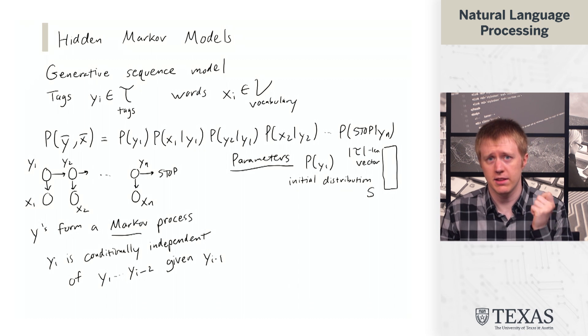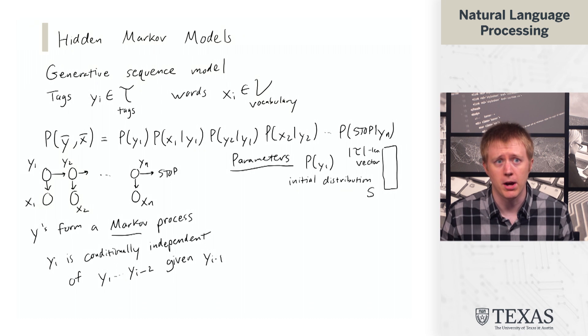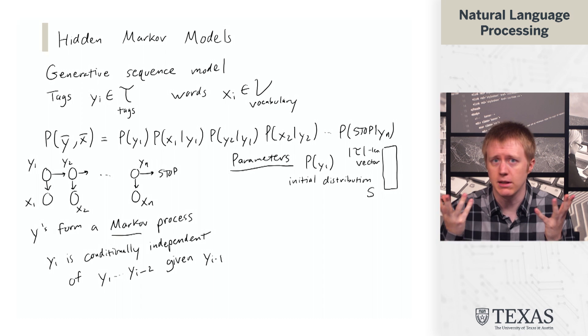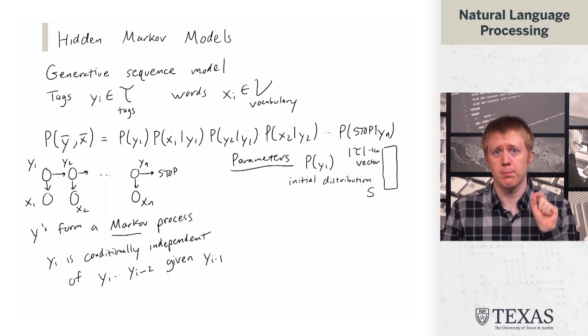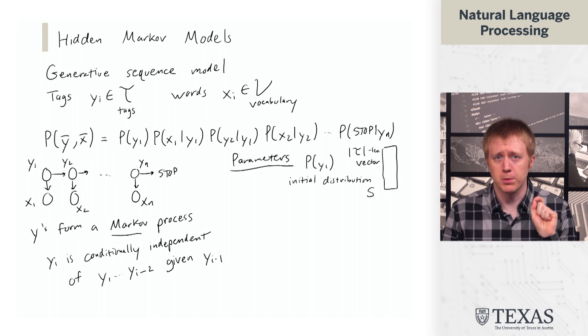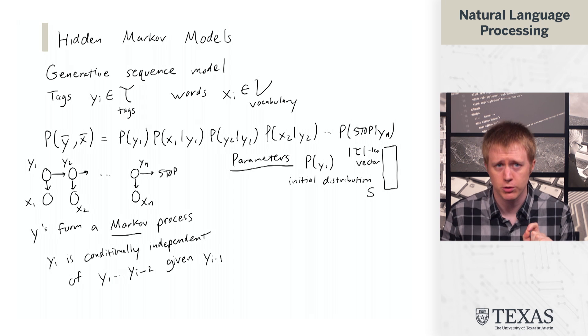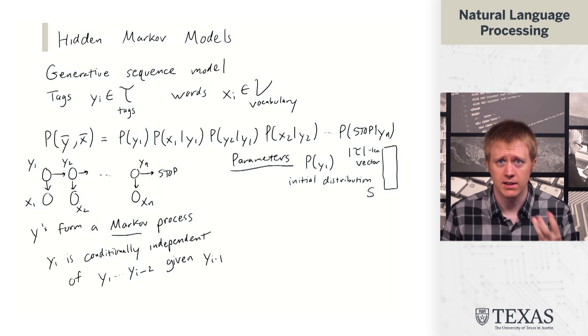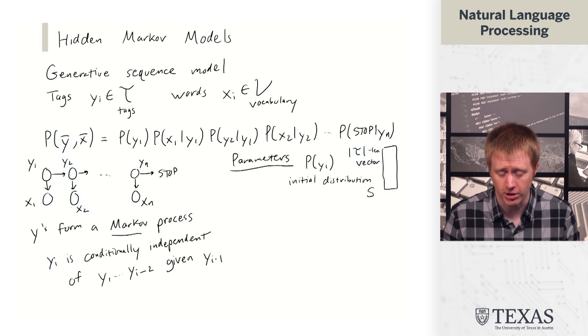So unlike a lot of the other models we've seen, like bag of words models, where the parameters can be any real valued, or any real number, here the parameters have to be real numbers between zero and one that sum to one, right? Because they're probabilities. And this is a distribution over what the possible starting tags are.